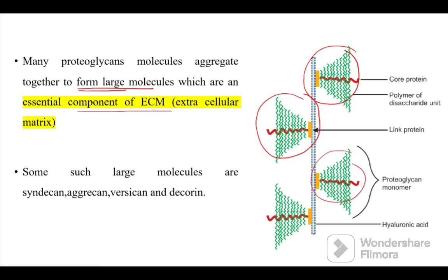Many heteropolysaccharides or glycosaminoglycans aggregate together to form large molecules, which are essential components of the extracellular matrix. Some examples of such large molecules are syndecan, aggrecan, versican, and decorin.